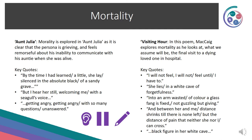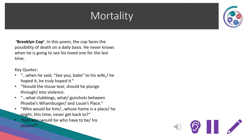In Visiting Hour, McCaig explores mortality as he looks at what will likely be the final visit to a dying loved one in hospital. Key quotes: 'I will not feel, I will not feel until I have to', 'She lies in a white cave of forgetfulness', 'Into an arm wasted of colour, a glass fang is fixed, not guzzling but giving', 'distance shrinks till there is none left, but the distance of pain that neither she nor I can cross', and 'black figure in her white cave.' Mortality also features in Brooklyn Cop — the cop faces the possibility of death on a daily basis, never knowing when he will see his loved one for the last time.